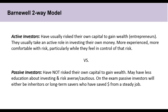The Barnwell two-way model simply divides investors into active and passive investors. An active investor is someone who's usually risked their own capital to gain wealth — they're entrepreneurs, have historically played an active role in investing their own money, tend to be more experienced, and are comfortable with risk, particularly when they feel in control, so look for folks comfortable holding concentrated positions. Passive investors have not risked their own capital to gain wealth — they could have inherited money or be long-term savers with a steady job. In contrast to active investors, they're usually more risk averse.